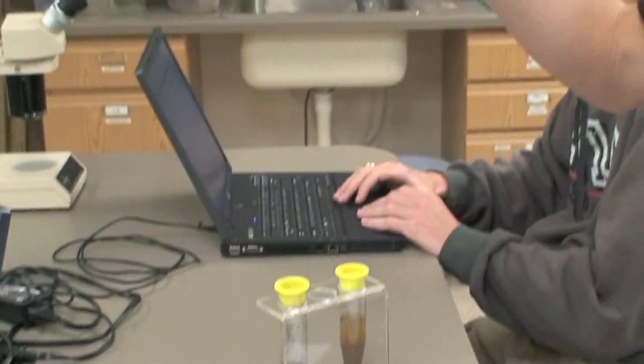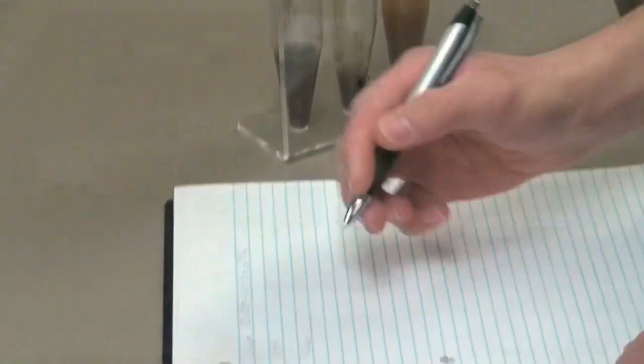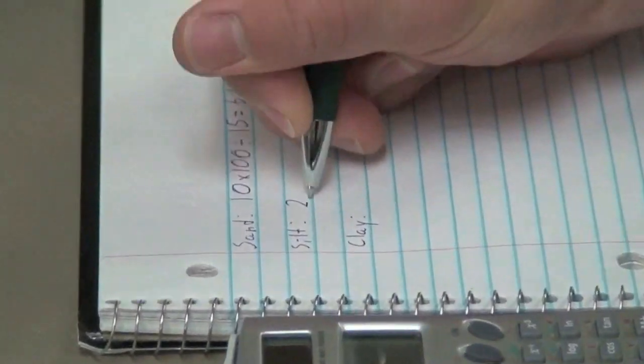Now look at the silt level in the second tube. Multiply the reading by 100 and divide by 15.